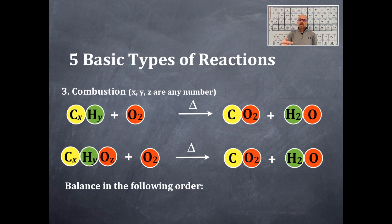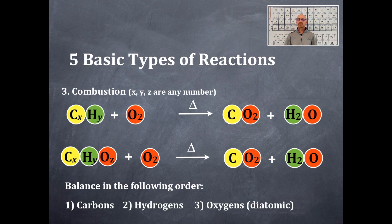One other thing with combustion reactions: you are always going to balance them in the following order — first balance the carbons, then the hydrogens, then the oxygens. Diatomics are always balanced at the end. It's really simple if you balance as carbons, hydrogens, oxygens, always in that order no matter what.